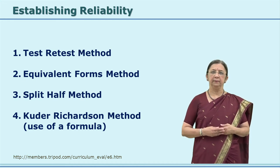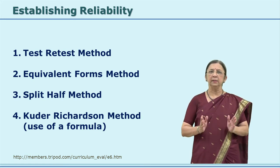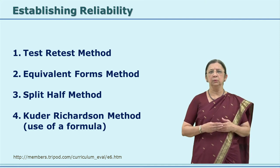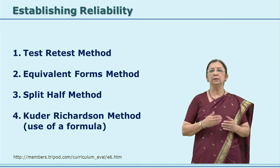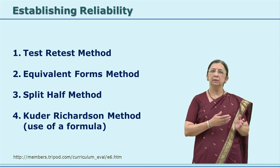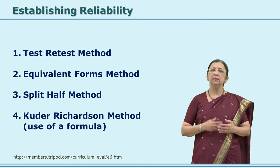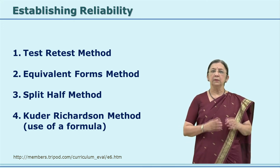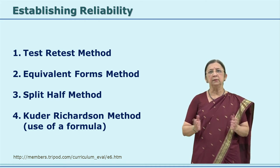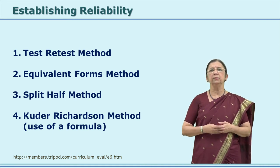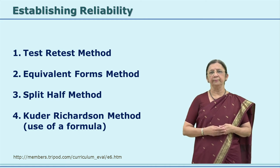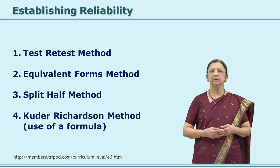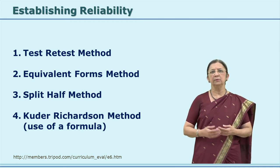The third method is the split-half method. As the name suggests, the whole tool — say 40 questions — is split into two halves and given to two groups. Since the tool addresses your concept, objectives, and theoretical framework, both halves should yield similar results. If the coefficient of correlation is high, your tool is reliable. The Kuder-Richardson method is a statistical method where you use a formula to establish that your tool is reliable.